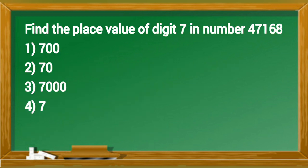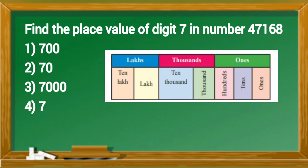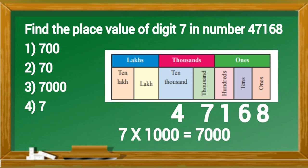Find the place value of digit 7 in number 47168. According to the number system, digit 7 has the place of thousand in number 47168. So the place value of 7 is 7 multiply 1000, that is 7000. So option 3rd is right answer.